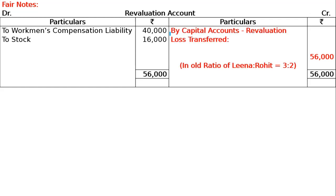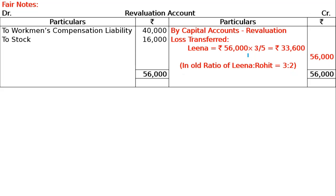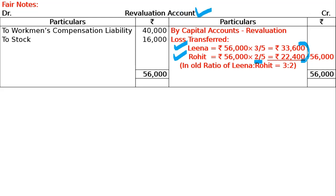Total revaluation loss is 56,000. Distribute this to old partners in the old ratio. Revaluation loss transferred in old ratio for Lena to Rohit = 3:2. So Lena's share = 56,000 × 3/5 = 33,600 and Rohit's share = 56,000 × 2/5 = 22,400. Journal entry: Lena's capital account debited 33,600; Rohit's capital account debited 22,400; to revaluation account 56,000.